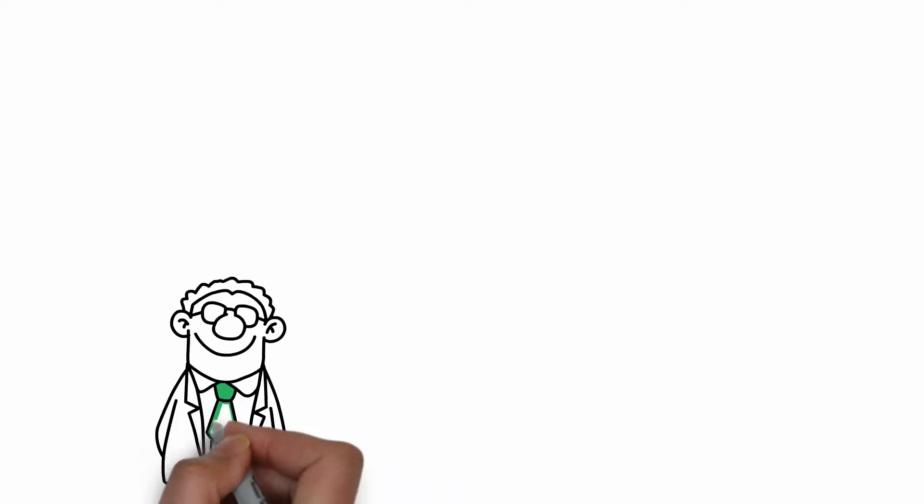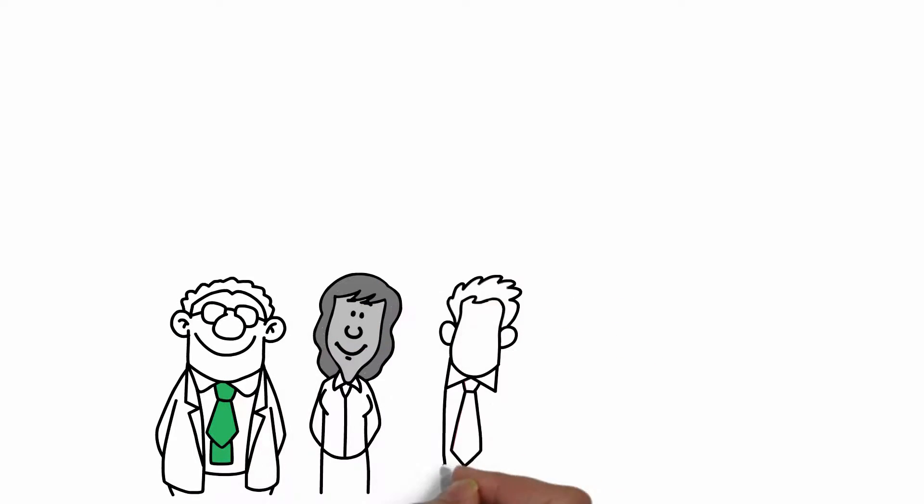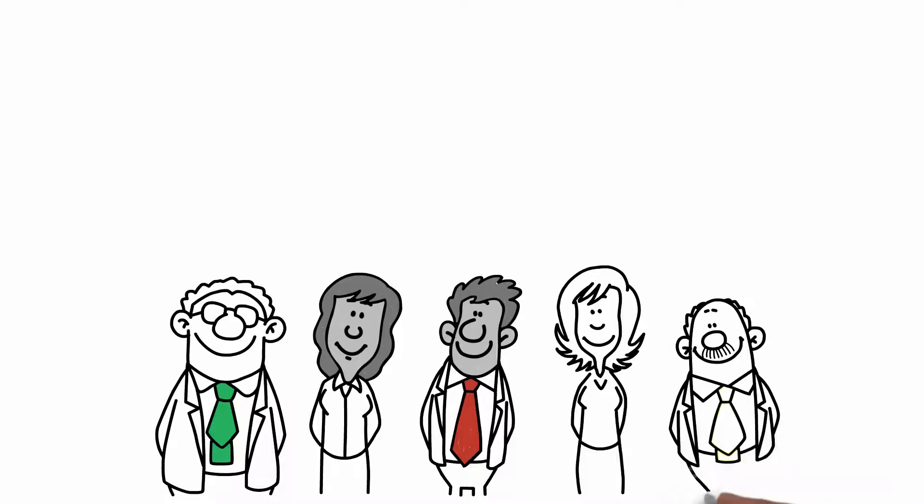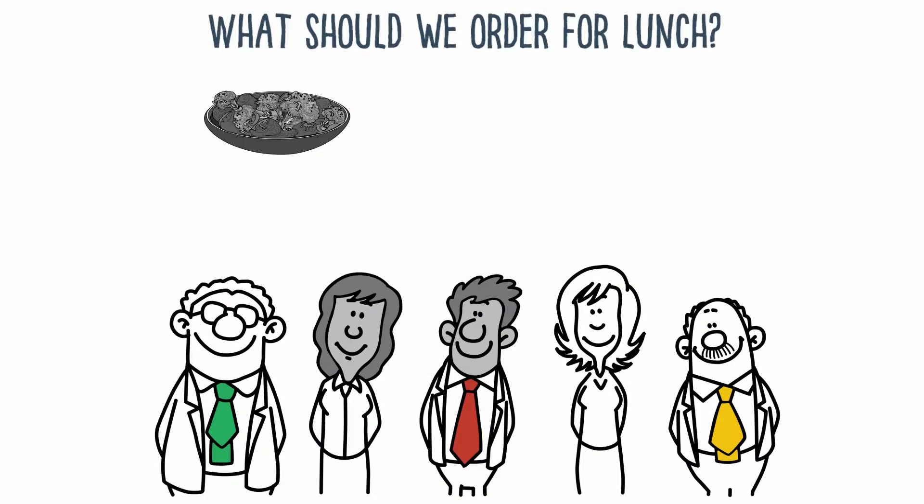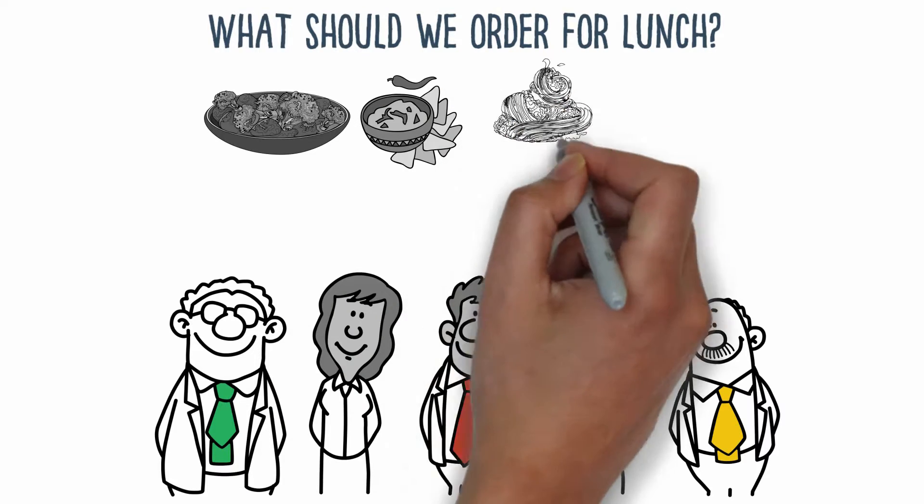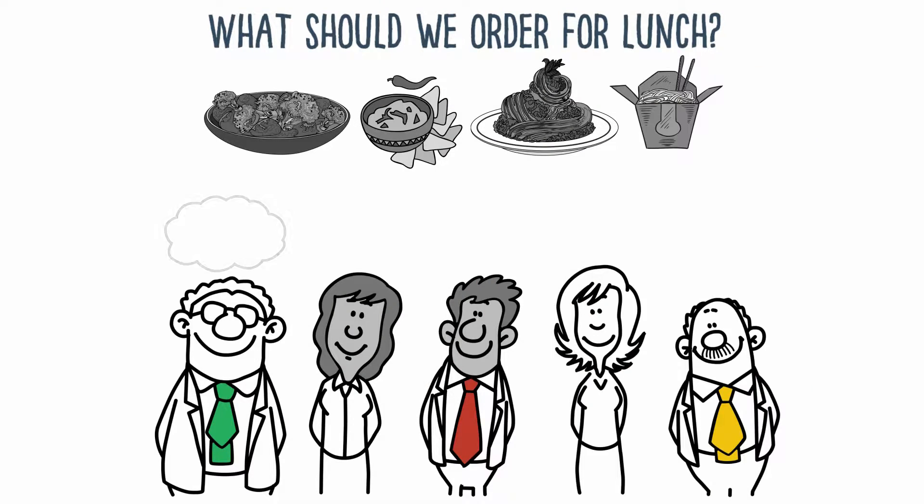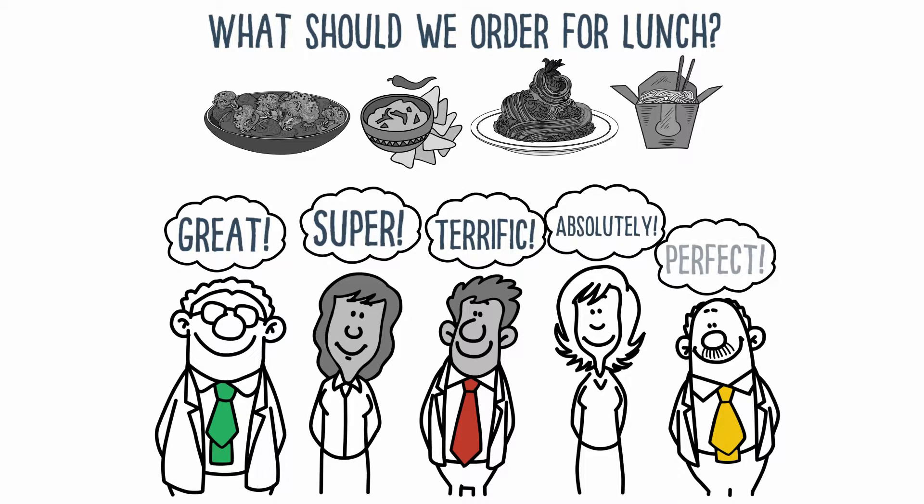Let's take a very simple example. Imagine a team needs to make a highly controversial decision. What should we order for lunch? Indian food, Mexican food, Italian food or Chinese food? How can we maximize the group's overall satisfaction?